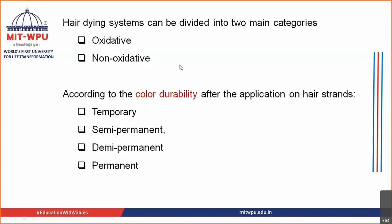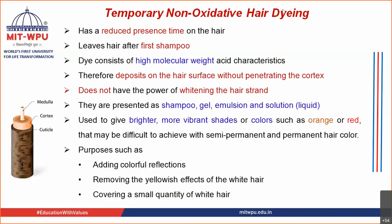Moving ahead with our first hair dyeing system — that is temporary non-oxidative hair dyeing system. Basically whenever the hair dye lasts for a short period of time, it usually is a non-oxidative hair dyeing system. We call it temporary because of the time it is present on the hair — it is present for a very short period of time. After you give a wash the second day, in the first shampooing the dye leaves your hair. Why? Because the dye consists of high molecular weight substances.